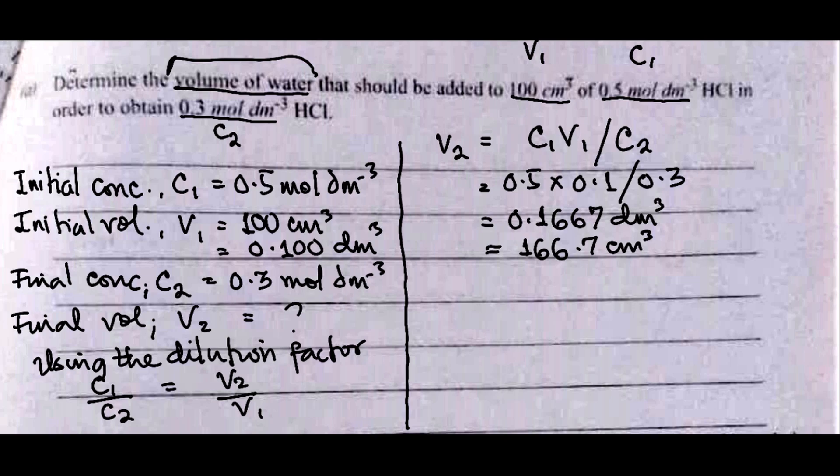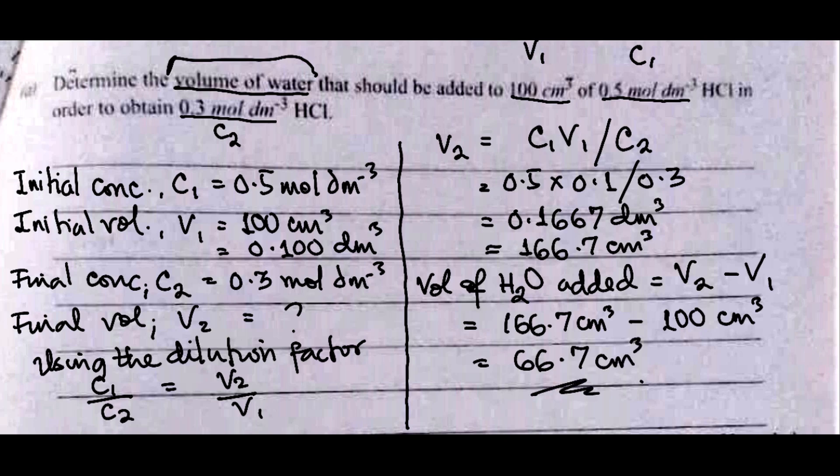This is our V2. Since the concentration is decreasing, we expect the final volume to be higher than the initial volume. Remember, volume is inversely proportional to concentration. But we are asked to calculate the volume of water that should be added. Since V2 is higher than V1, water was added to V1 to make it up to V2. So volume of water added is V2 minus V1, which is 166.7 cm³ minus 100 cm³, giving us 66.7 cm³ of water to be added.